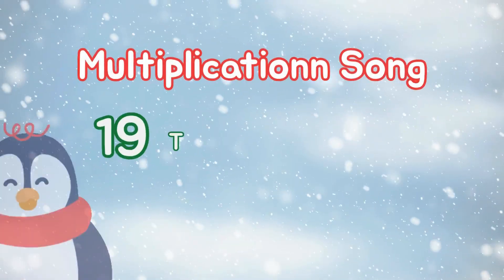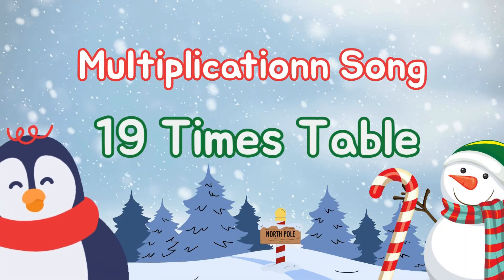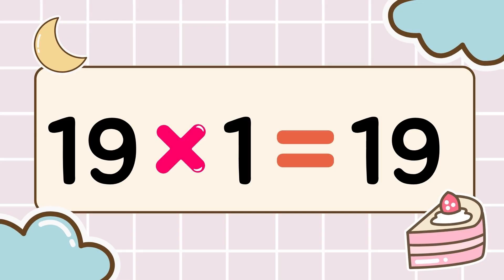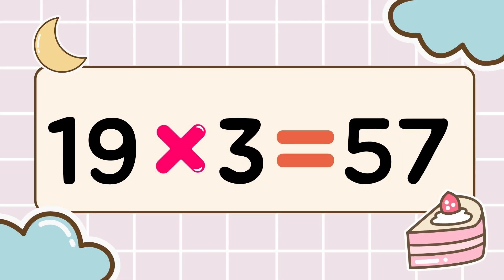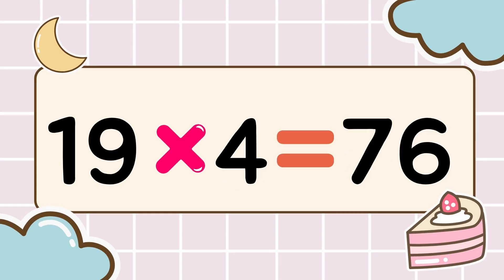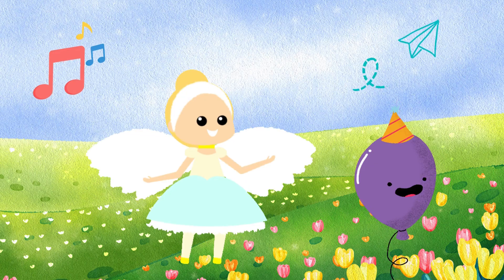Math time! Let's multiply! Let's have fun while we memorize. 3, 2, 1, go! 19 times 1 is 19, 19 times 2 is 38, 19 times 3 is 57, 19 times 4 is 76, 19 times 5 is 95. Awesome!